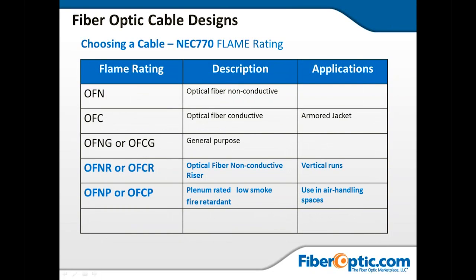These are fire codes or flame ratings printed on the outside jacket. You have OFN versus OFC — OFC means there's a metal conductor or armor jacketing in it. OFNG or OFCG is general purpose. Then you have OFNR and OFNP — riser-rated and plenum-rated — used for fire codes. Plenum-rated cable can't expel toxic smoke in areas where people breathe, such as air-handling spaces. Riser-rated is for vertical runs like elevator shafts where smoke won't accumulate.